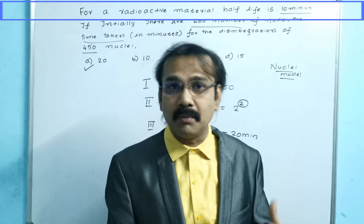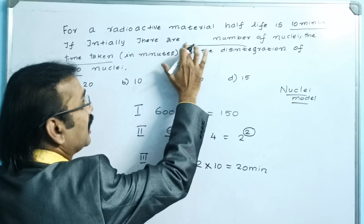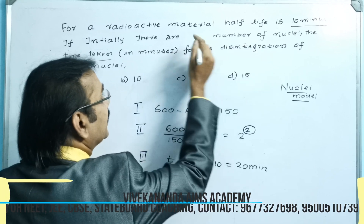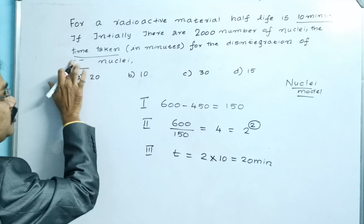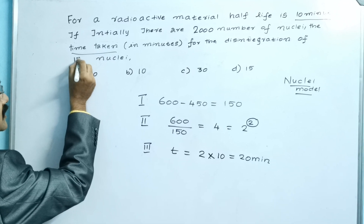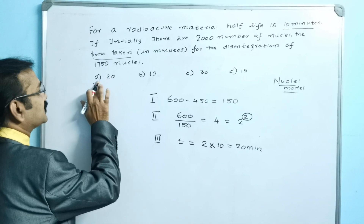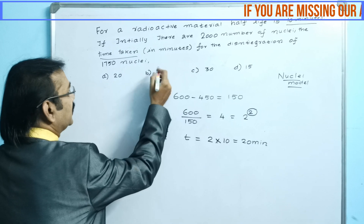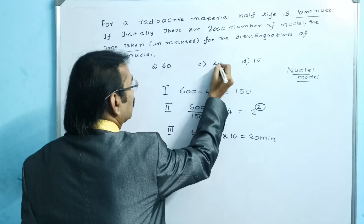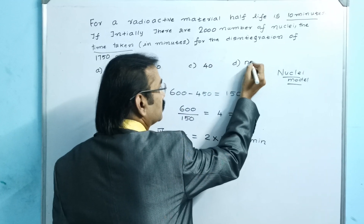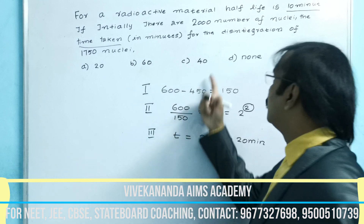Now let me go with different numbers for the same model — I am just changing the numbers. Instead of 600 I am going to write 2000, and instead of 450 I am going to take 1750. The same half-life of 10 minutes will be used. The new options are: 20 minutes, 60 minutes, 40 minutes, or none. Apply the same three steps with the two numbers 2000 and 1750.